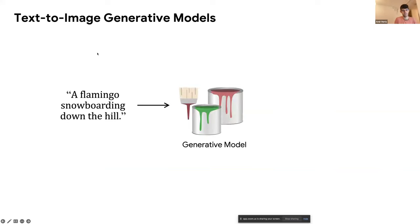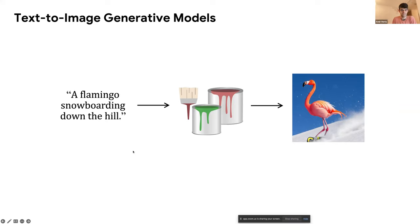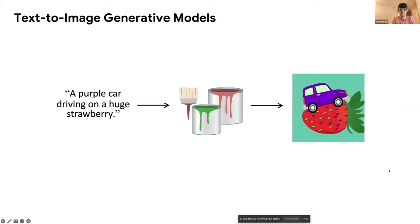A little bit of background: we already know about image-generative models, more specifically diffusion models that can generate images from any given text. These slides are not very exciting now because we are already used to these models, but one and a half to two years ago it was more surprising how good these images were and how well the text alignment worked.